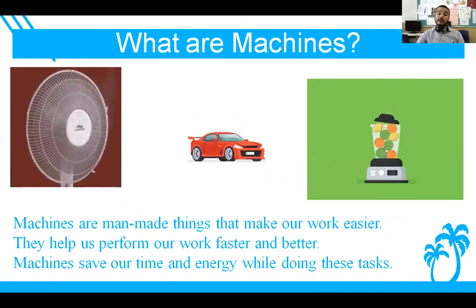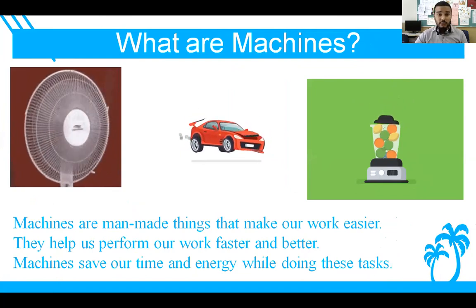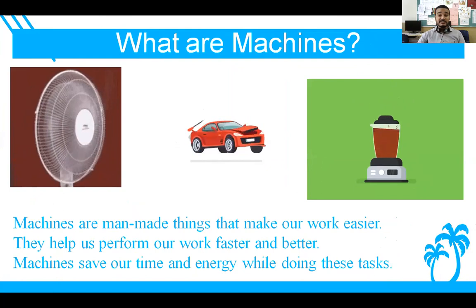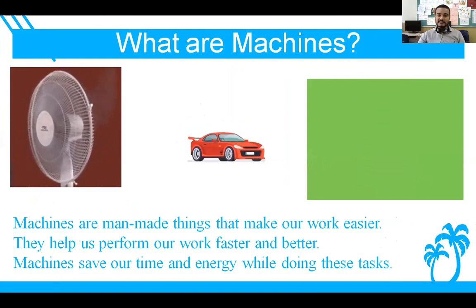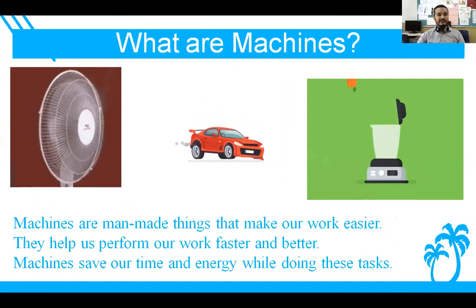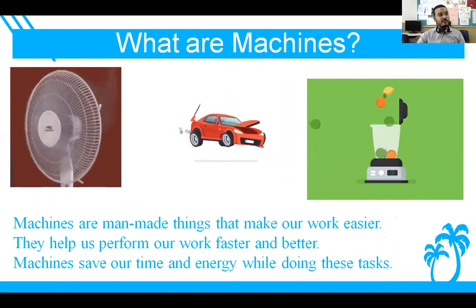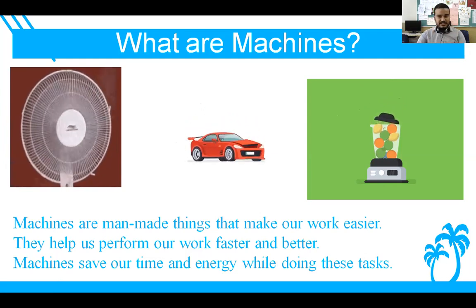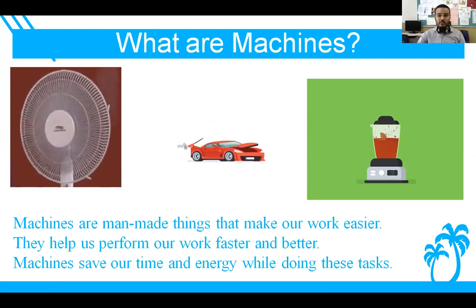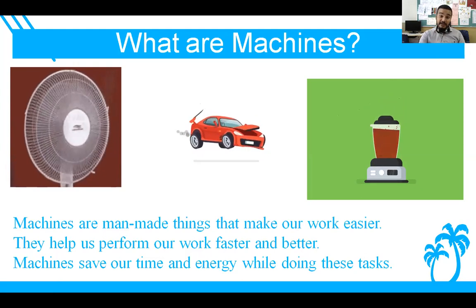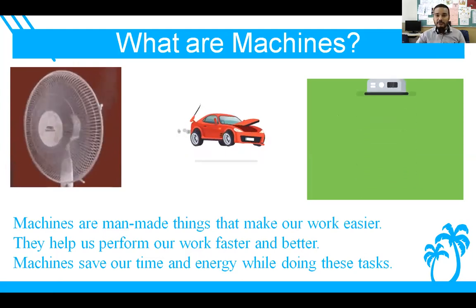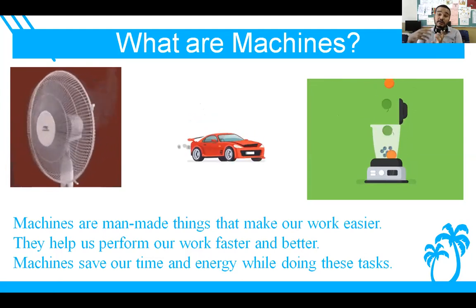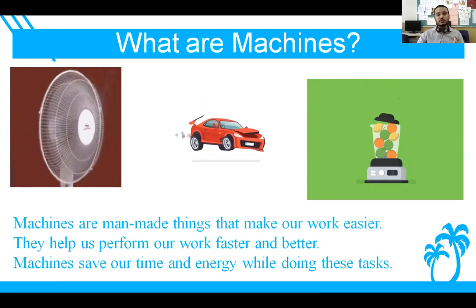Manmade things are nothing but machines. We will learn what machines are. In the picture you can see one fan giving us air, one car, and one mixer juicer which takes fruits, grinds them, and gives us juice. Machines are manmade things that make our work easier, faster, and better.